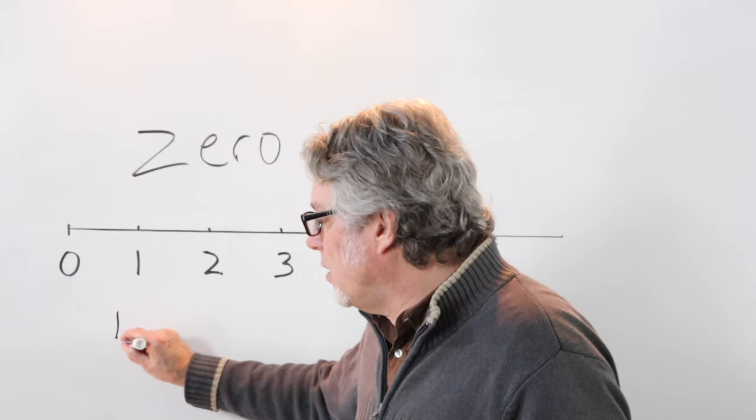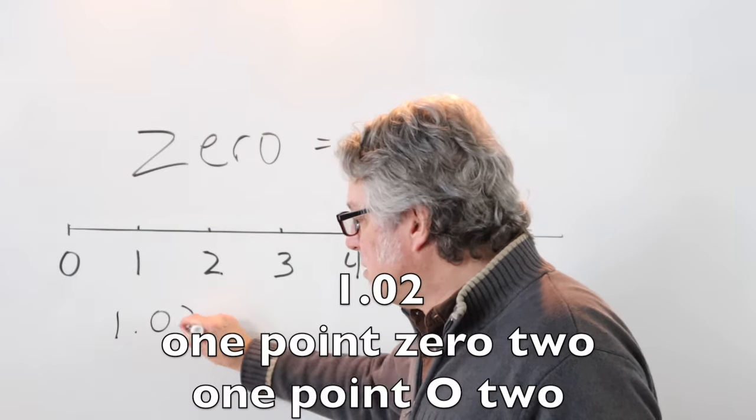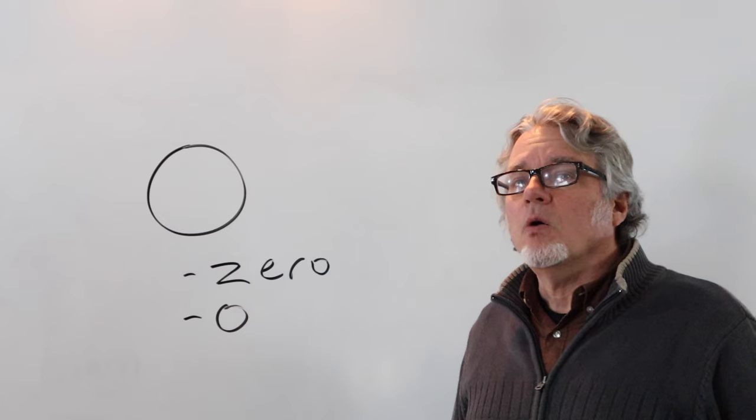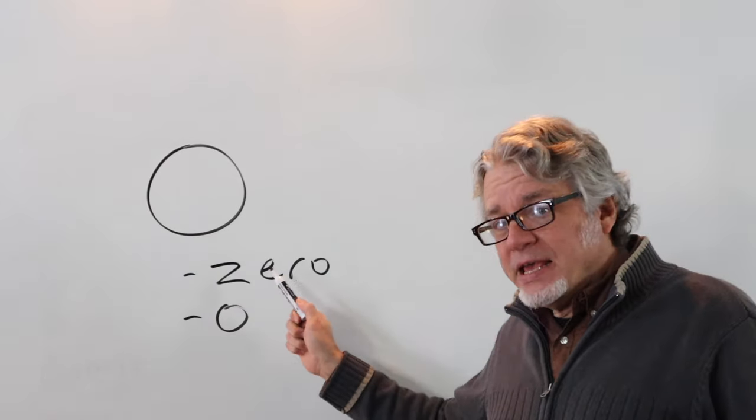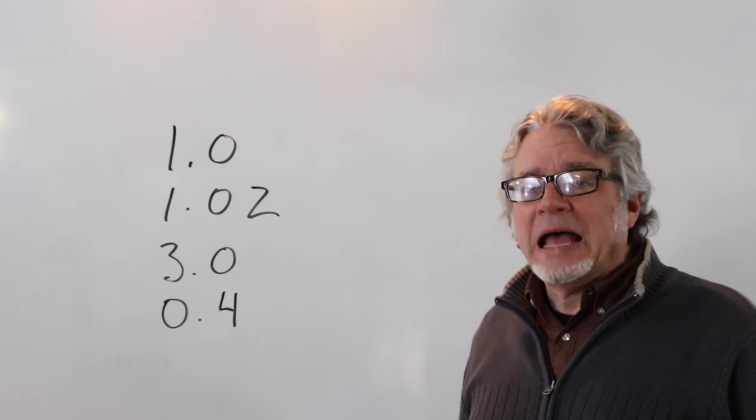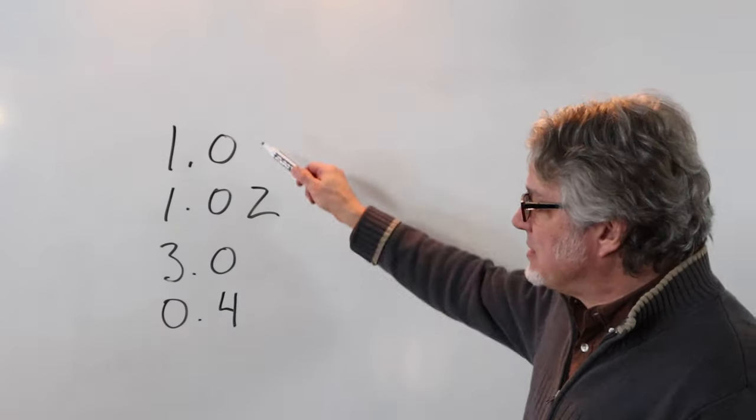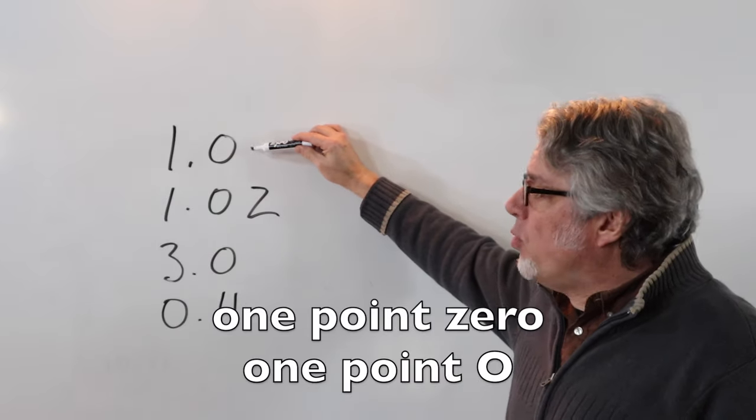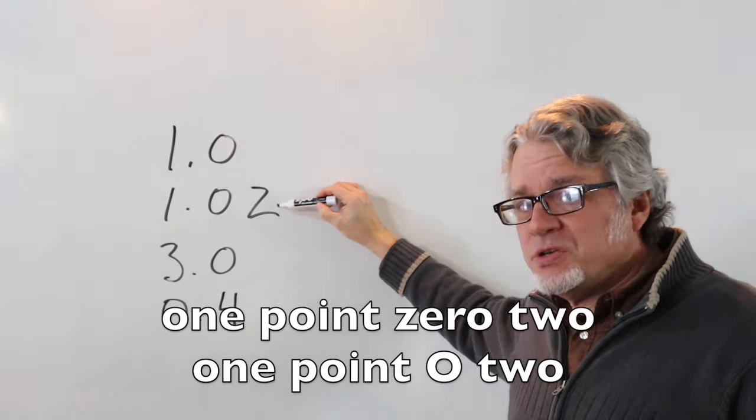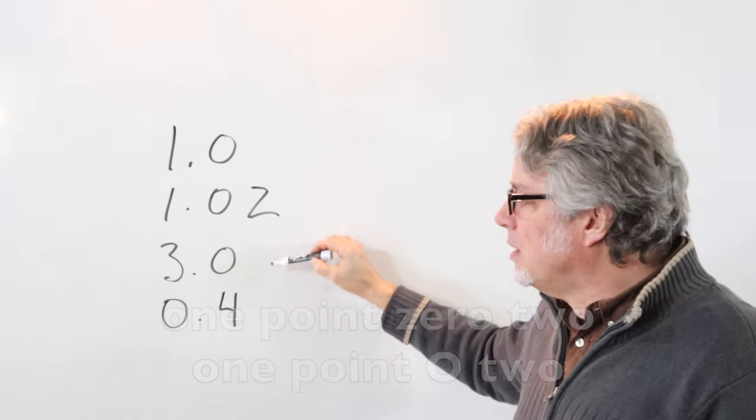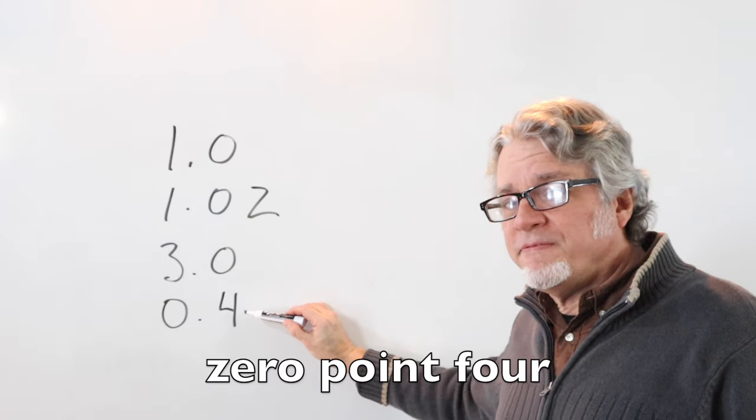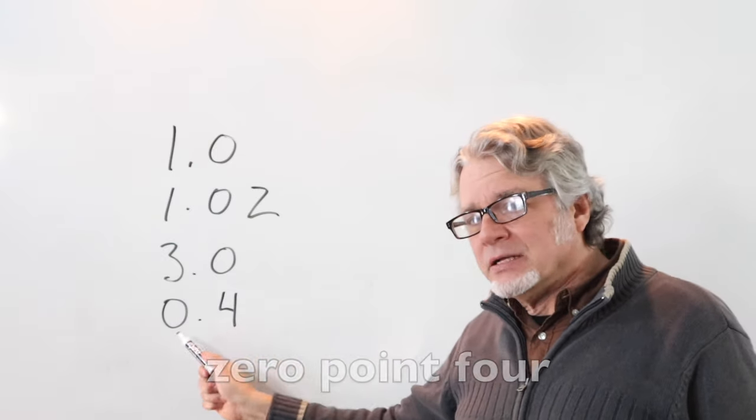After the one, one point zero two, or one point oh two. When you see a zero, sometimes you'll say zero, and at other times you'll say oh. Depending on the reason for using these kinds of numbers, this could be read one point zero or one point oh, one point zero two or one point oh two, three point zero or three point oh, zero point four but probably not oh point four. In this case, read this as zero point four.